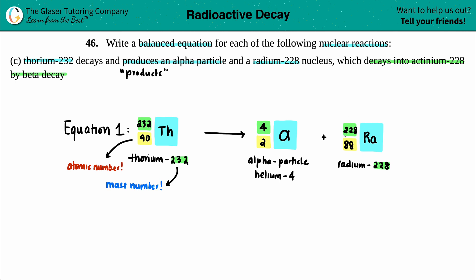Now let's see if this is balanced. If it's balanced, the top numbers across the yield sign will equal. So let's see. Four plus 228 is 232. And that's exactly what we have on the reactant side. Two plus 88 is 90. And that's what we have. So we have our first equation.